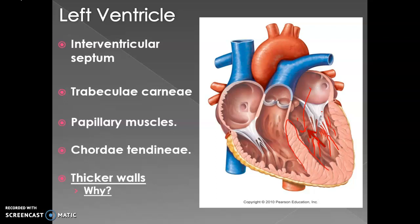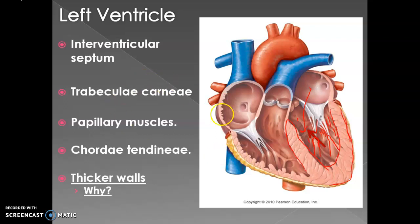Looking at the left ventricle, the muscle is noticeably much thicker than the right side. This is because the left ventricle pumps blood into the aorta, which then distributes it throughout the body. The left ventricle must pump hard to push blood to all parts of the body, which is why it has a thicker musculature.